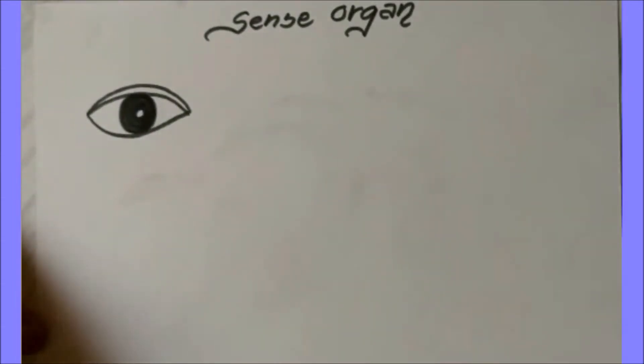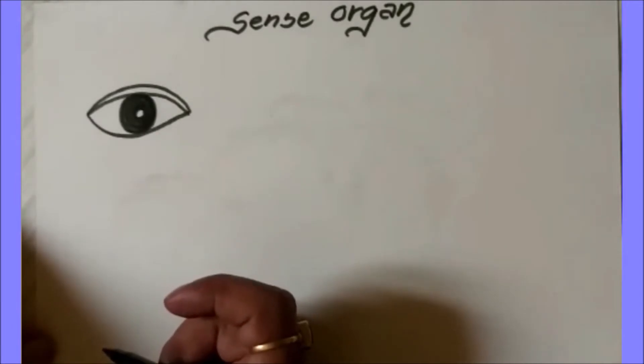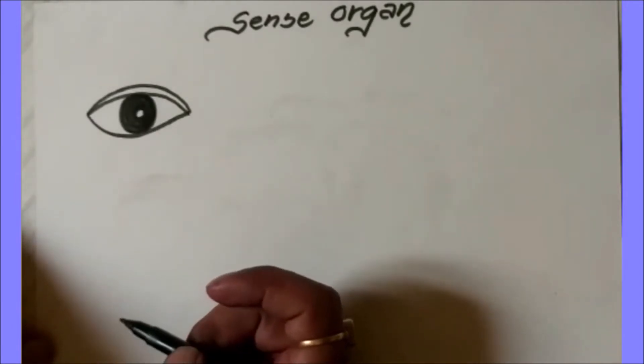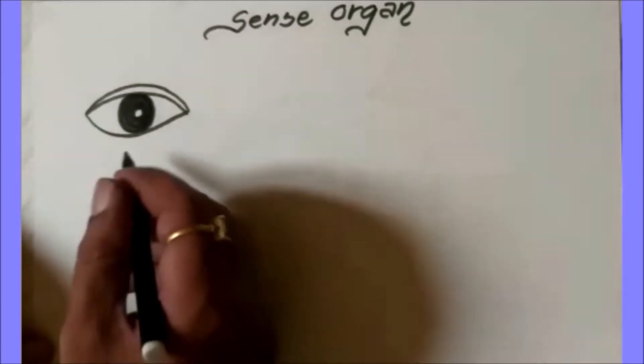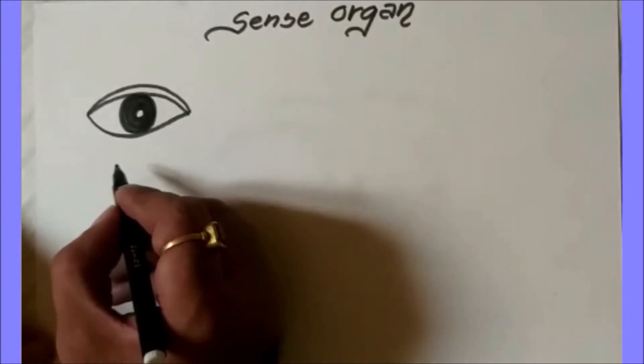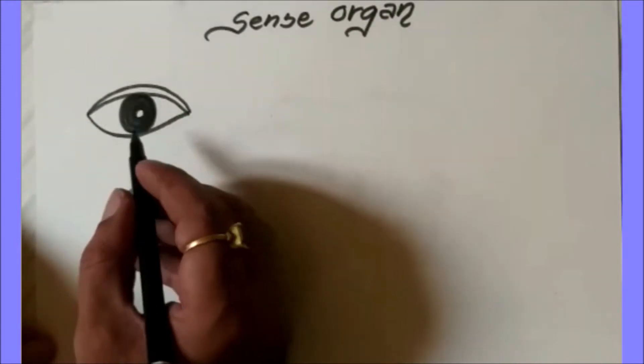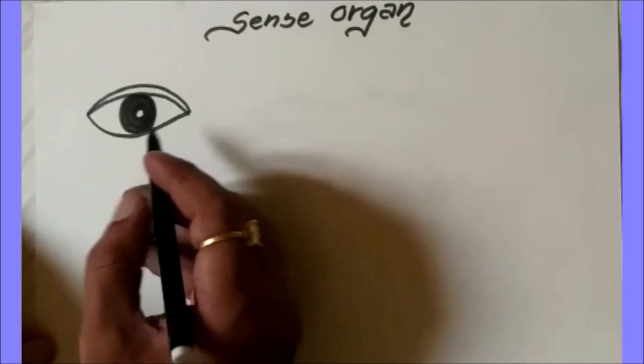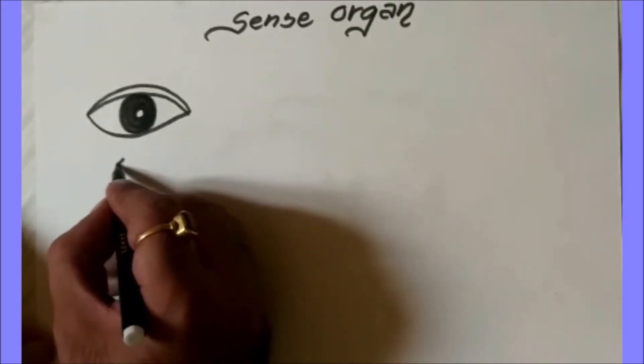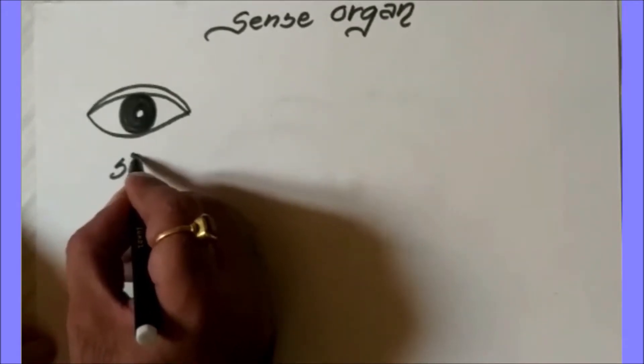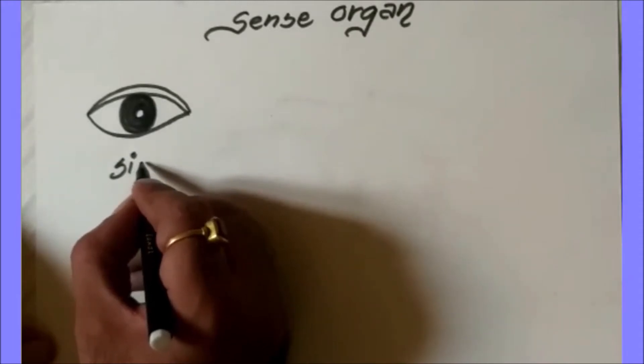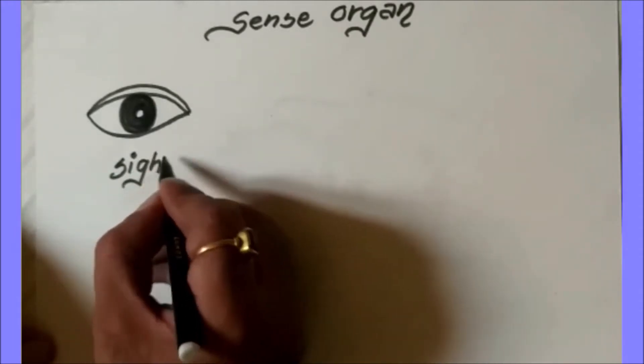Here eyes are ready. It is useful for seeing things, so we can see and it is very important for the working of looking. It is said to be sight.